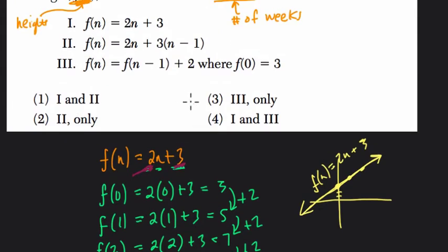f(n) equals 2n plus 3. All right, so this works. 1 definitely works. So now we can eliminate choices 3 and 2, because we know 1 is at least one of the answers. So the question is, is choice 3 an answer as well? Now before we talk about that, let's just pretend, for example, there was another choice. Oh, there is. I'm missing it. There is 1 and 2. See that? I missed that.